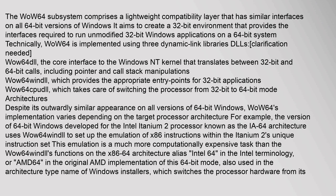The WOW64 subsystem comprises a lightweight compatibility layer that has similar interfaces on all 64-bit versions of Windows. It aims to create a 32-bit environment that provides the interfaces required to run unmodified 32-bit Windows applications on a 64-bit system. Technically, WOW64 is implemented using three dynamic link libraries (DLLs): the WOW64 DLL, the core interface to the Windows NT kernel that translates between 32-bit and 64-bit calls.